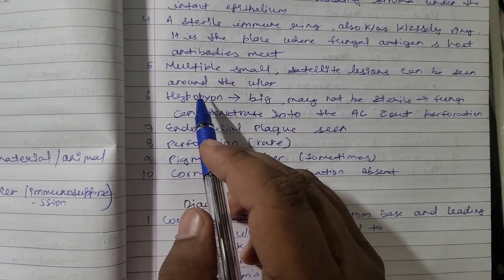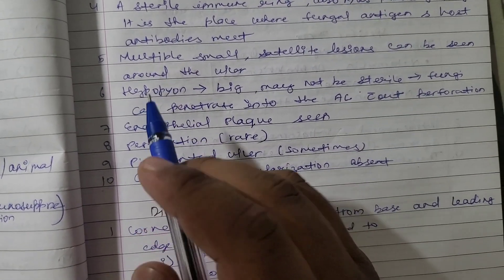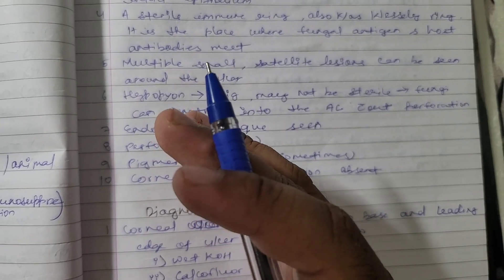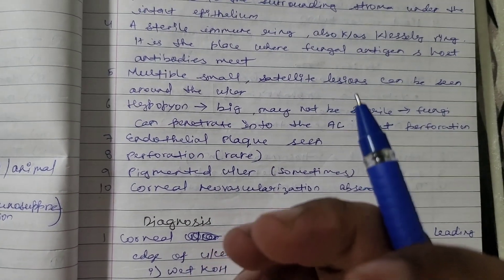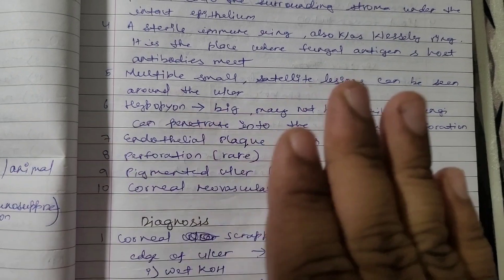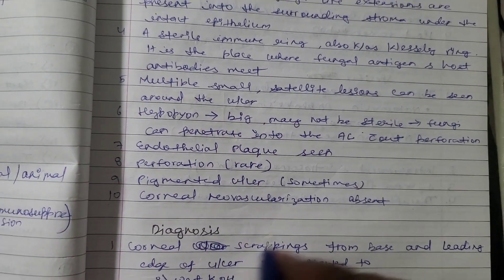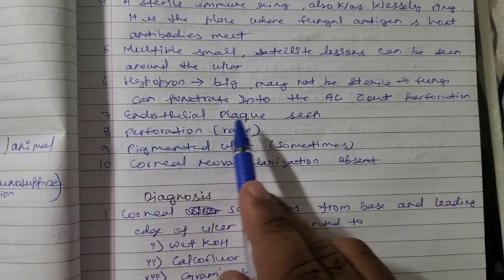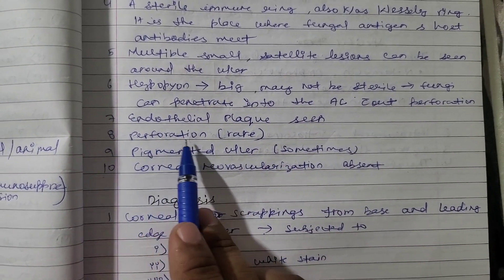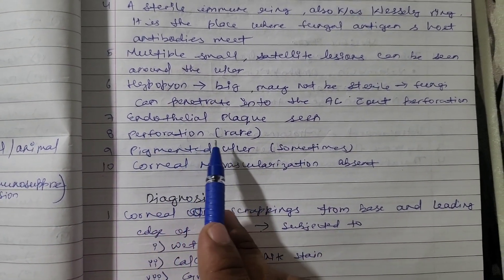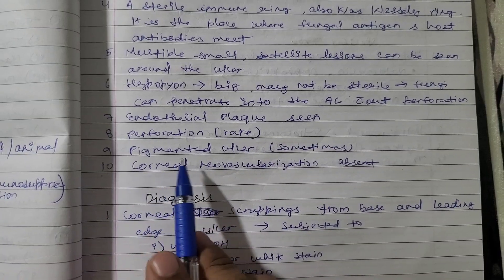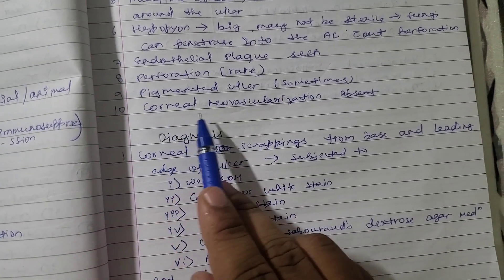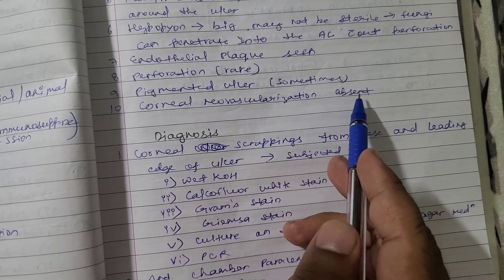Sixth: hypopyon may be present and may not be sterile, as fungi can penetrate into the anterior chamber without perforation. Hypopyon is the leading of white blood cells accumulating in the lower portion of the anterior chamber, appearing as a white level. Seventh: endothelial plaque. Eighth: perforation, which is rare. Ninth: pigmented ulcer sometimes. Tenth: corneal neovascularization is absent.